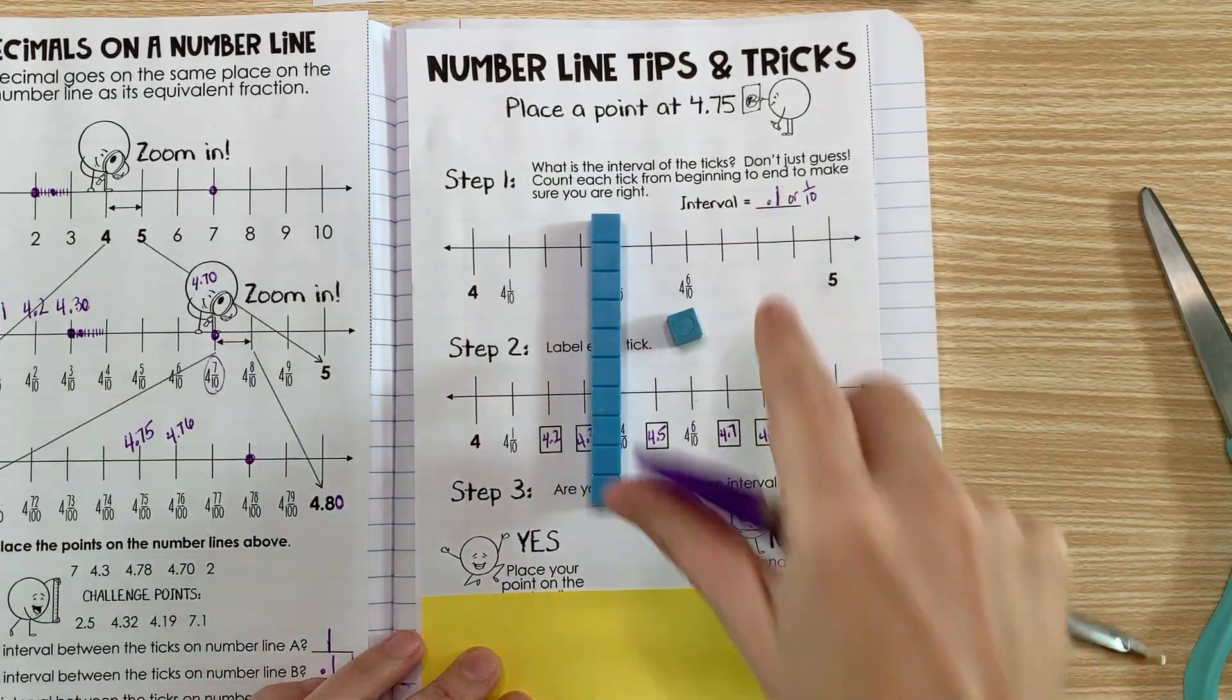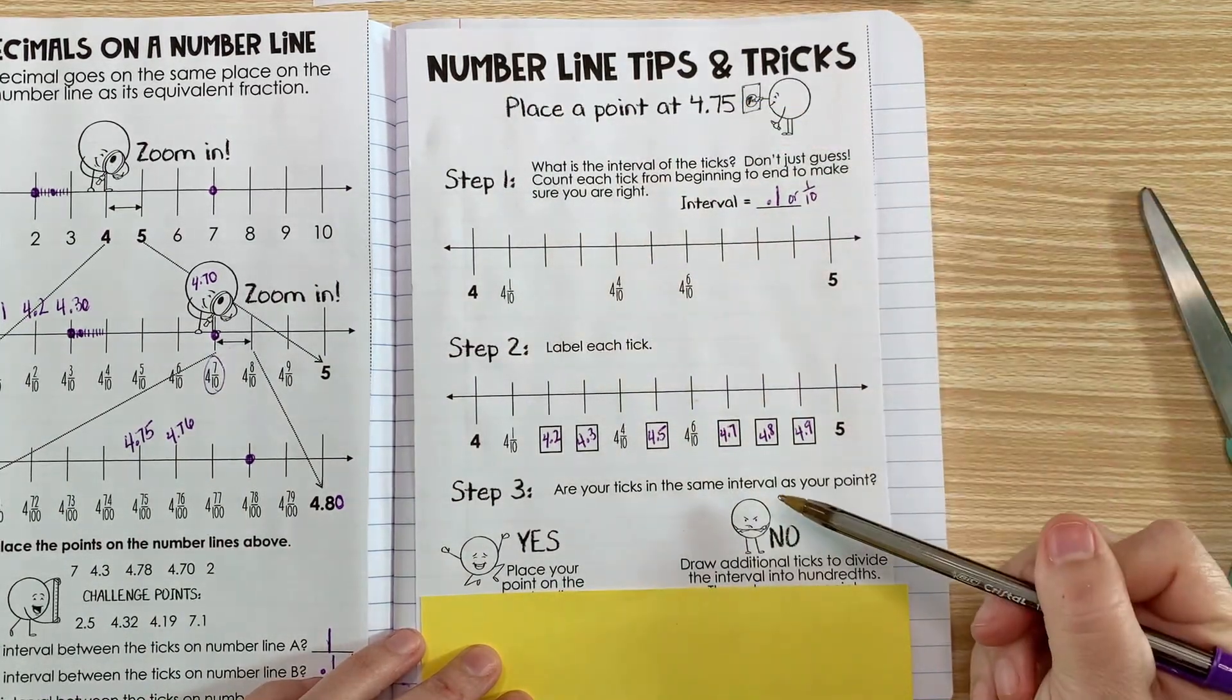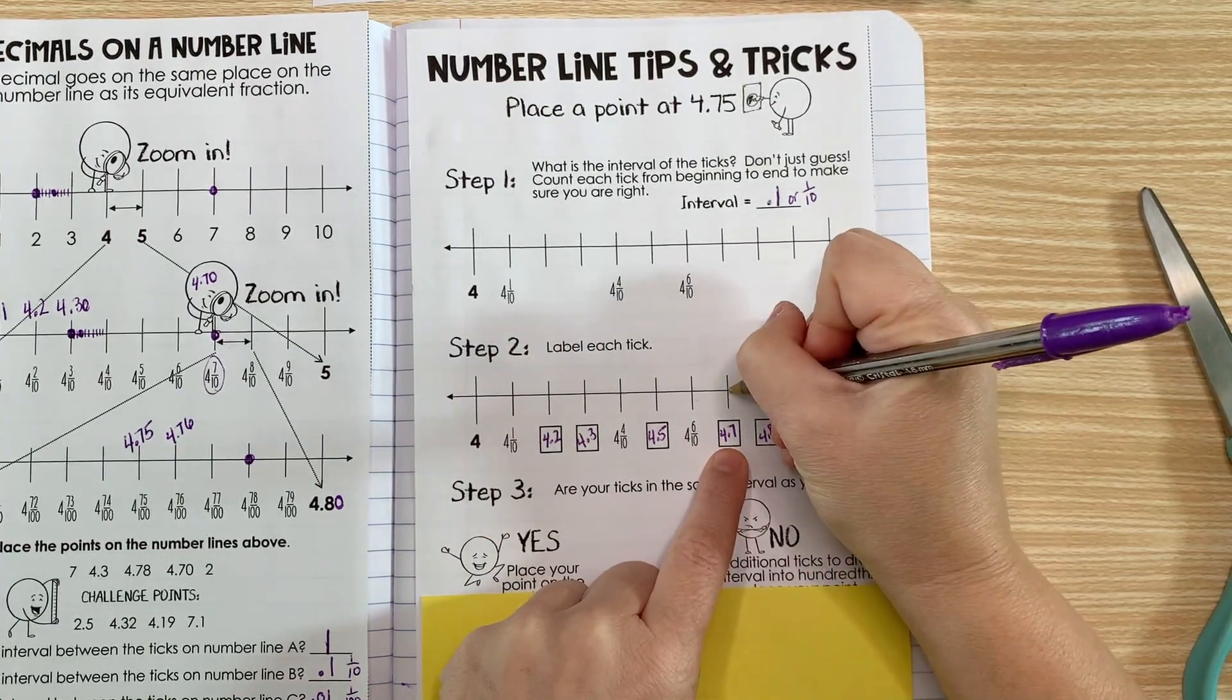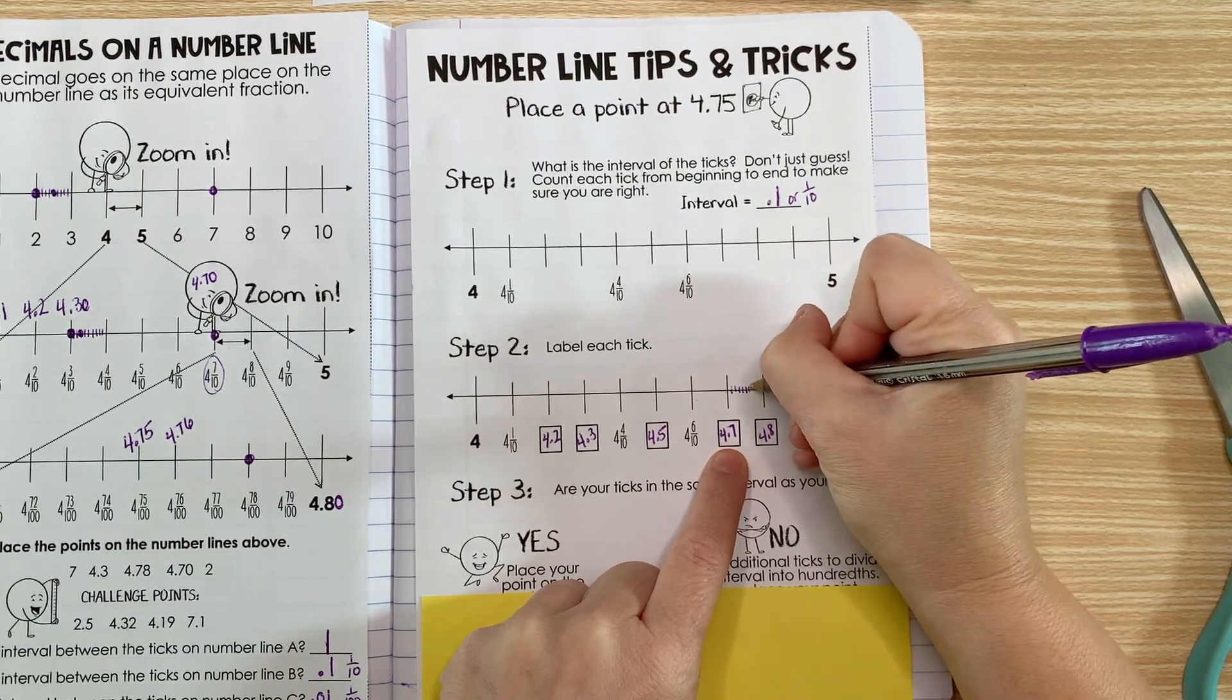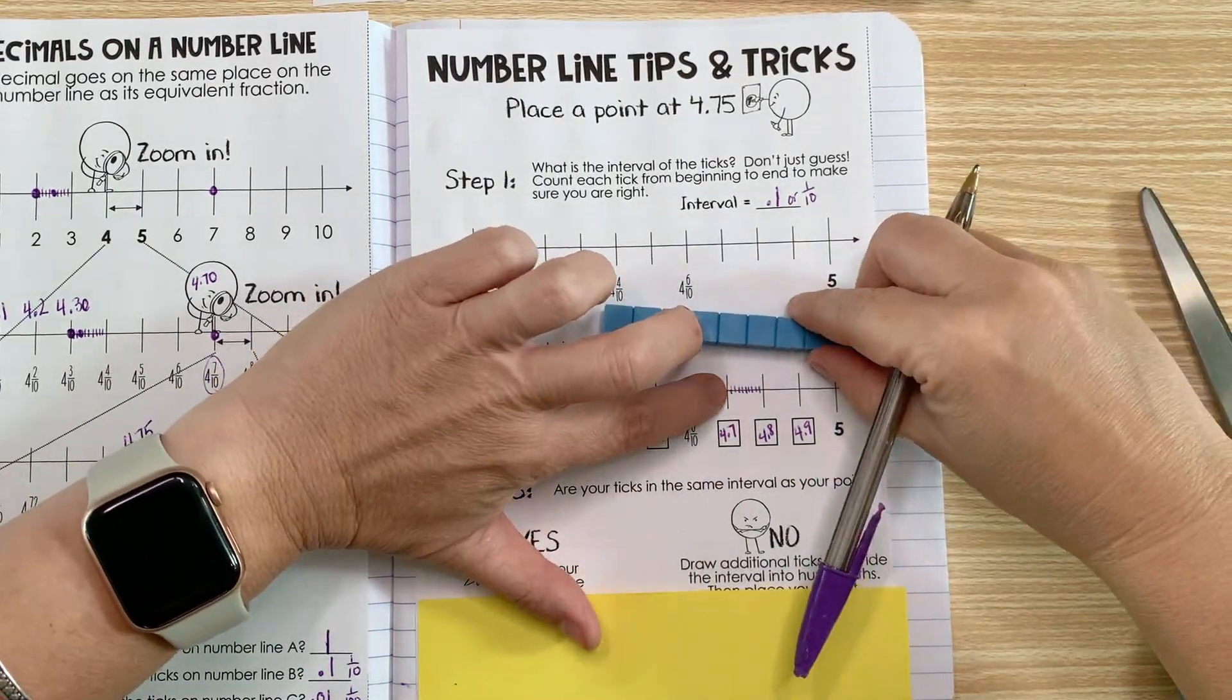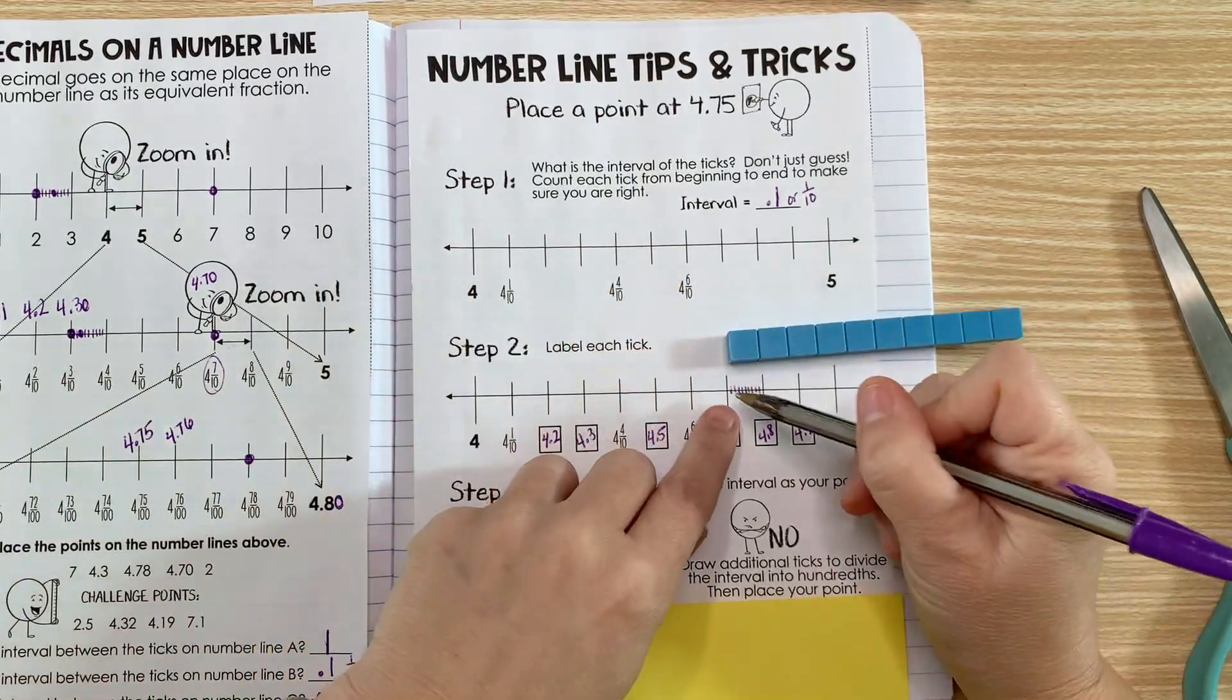What we have to do is go between 4.7 and 4.8 and divide it into ten equal parts to make a hundredth. So if I have 4.7, I just need to make ten equal parts: one part, two parts, three, four, five, six, seven, eight, nine, ten parts. So basically, you can imagine those purple little lines are hundredths.